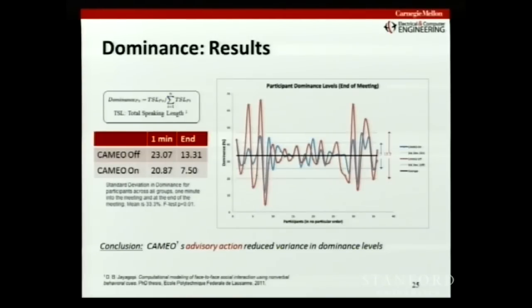We can conclude that Cameo's advisory actions reduced variance in the dominance levels. What's even more surprising is that people said they didn't notice the prompts. That's kind of scary because that means nothing would show up in the data — but the data was different. It's quite surprising.